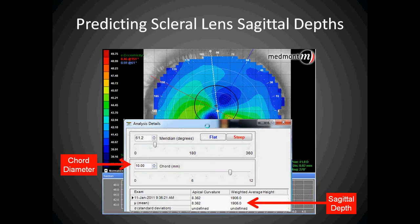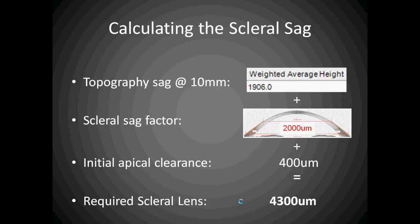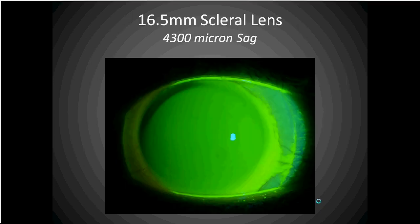Simply go to your Analysis and Details window, set your cord at 10mm diameter, then measure the weighted average height — the second column — and that will provide you with the sagittal depth of the eye. Then take your corneal sagittal depth, add it to your scleral sag factor — your average of 2,000 microns of depth from 10 to 15mm — plus your apical clearance, and that gives you the required sagittal depth of lens, if your scleral lens lands very close to a 15mm cord. This is a method we can use to more accurately predict the initial scleral lens required for your patients.